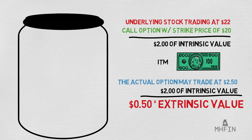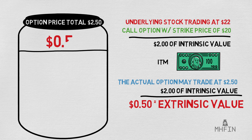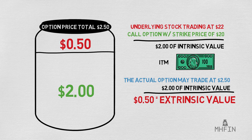Now if we look at the container setup on the left, we can see that $2.50 is the option price, and $0.50 of that is the extrinsic value. You can read into much more detail about this concept on sites such as Investopedia, but what is important to understand is that Theta only affects the extrinsic value portion of an option.